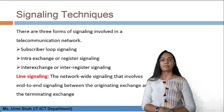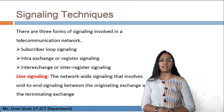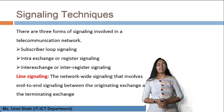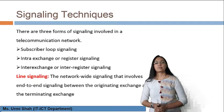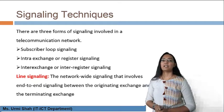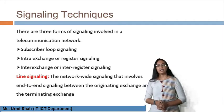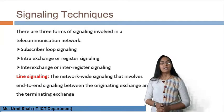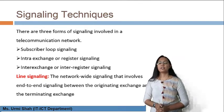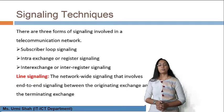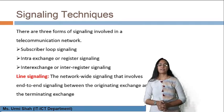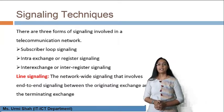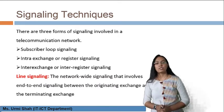Moving ahead, there are three forms of signaling involved in a telecommunication network: subscriber loop signaling, intra-exchange or registered signaling, and inter-exchange or inter-register signaling. These signaling techniques are applicable to certain classes of signaling. In the previous session we covered the classification of signaling techniques, which has two major types: line signaling and common channel signaling.